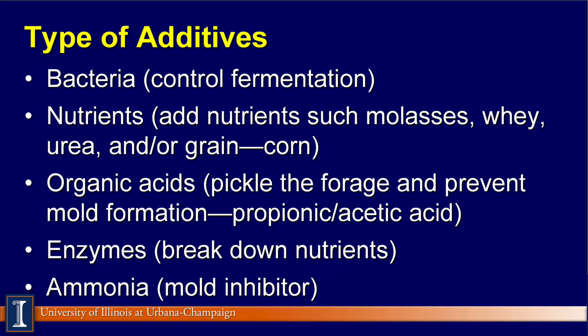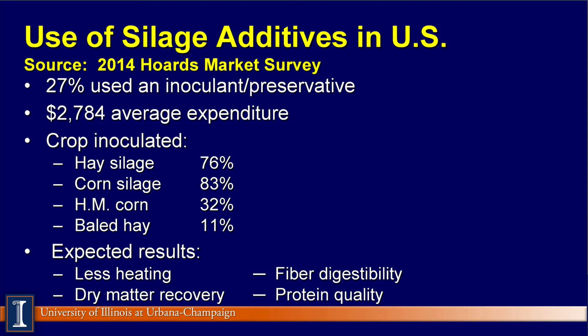So we have several different additives to consider when making silage. Looking at the 2014 Hoard's Dairyman Market Survey, they check on additive use in the U.S. from their readers. About 27% indicated they were using an inoculant preservative. That number might be a little higher because many custom harvesters apply it automatically as part of their service. The typical expenditure for a producer to treat silages was about $2,700.